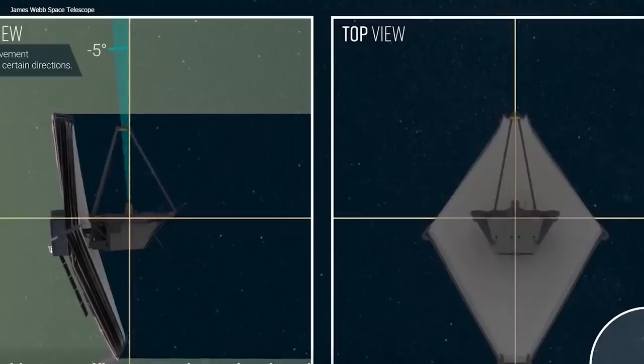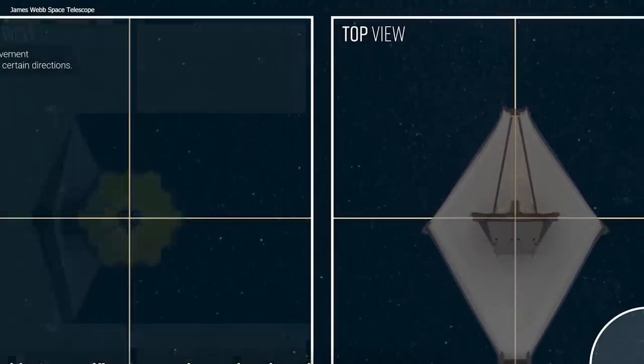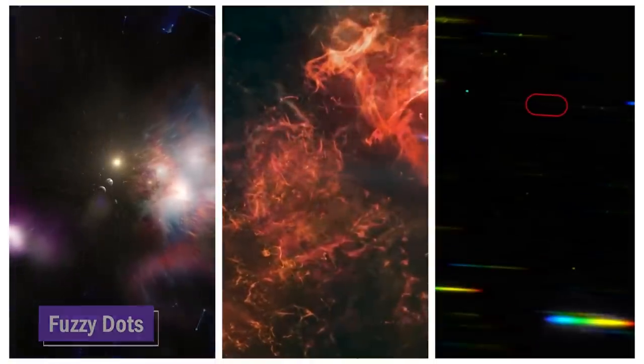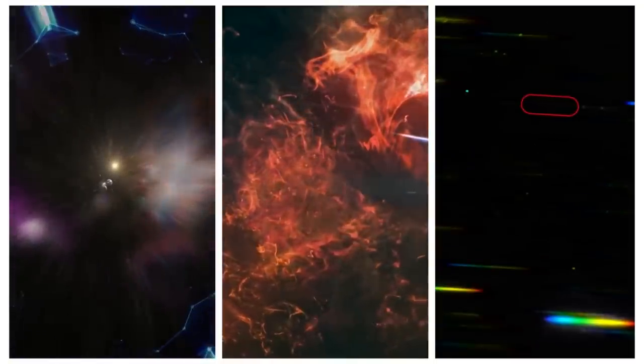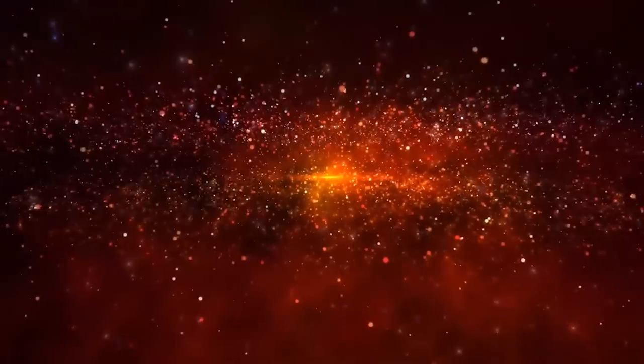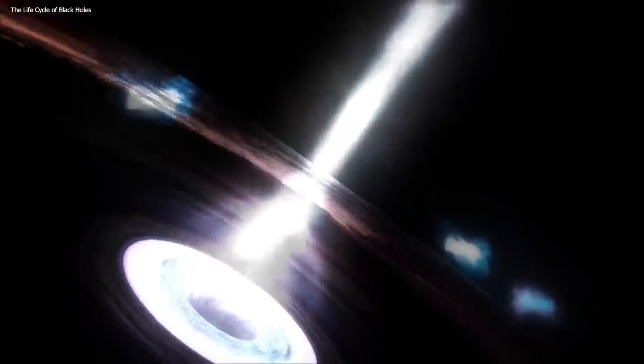So how did the James Webb Telescope stumble upon these cosmic giants? With its mind-blowing infrared sensing instruments, it sifted through the ancient light emitted by stars and galaxies. And guess what caught their attention? A series of fuzzy dots that were insanely bright and radiated a mind-bogglingly deep red glow. In the wild world of astronomy, redness screams age. As light traverses the ever-expanding universe, it gets stretched out and turns redshifted.